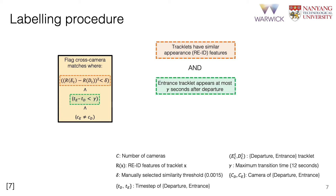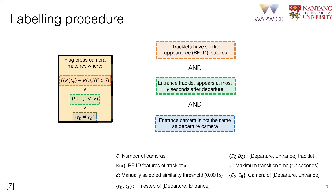Both tracklets must occur within a time window of 12 seconds and occur in different camera views. The human annotator then verifies if the pair is the same individual for all pairs that meet these criteria. This step assures data quality at all stages, as the annotator also discards poorly localized detections and fragmented tracks.